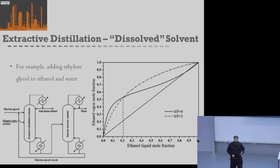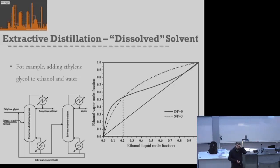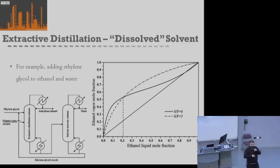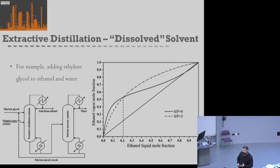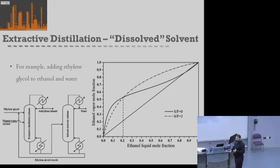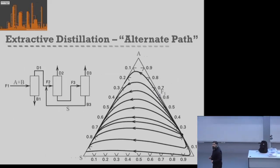An alternative case is when the solvent has a boiling point only slightly higher than the feed components, so it actually participates in the vapor-liquid equilibria — there's some vapor solvent on each stage as well as liquid. In this situation we can't use the simplified pseudo-two-component approach; instead we have to move towards a ternary diagram system.